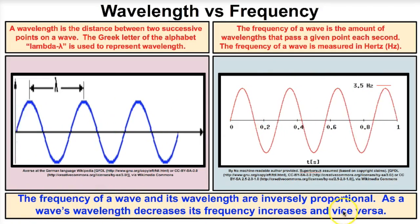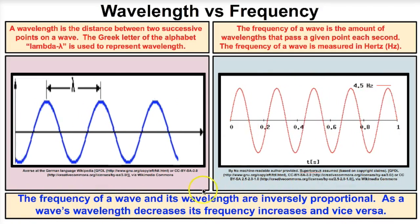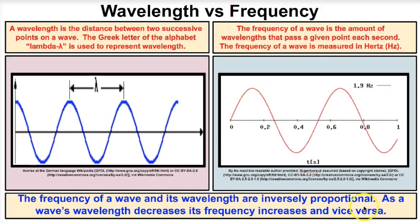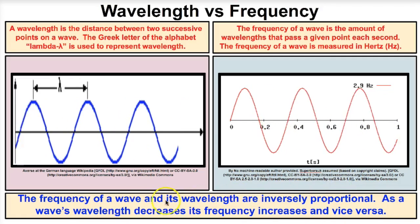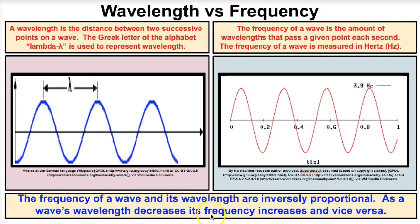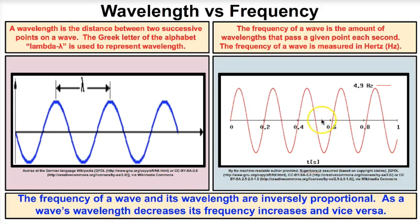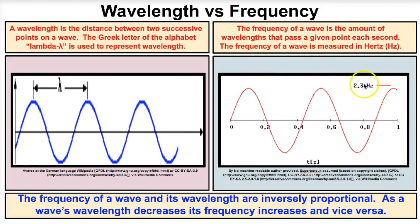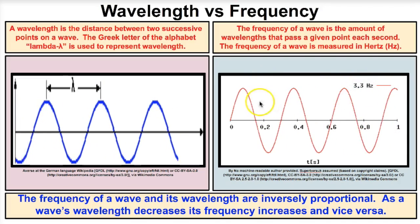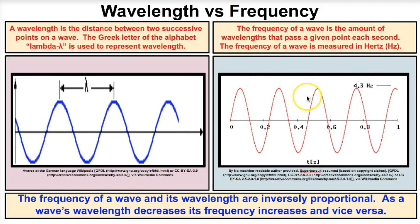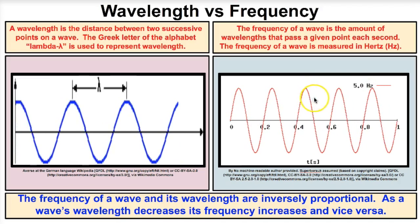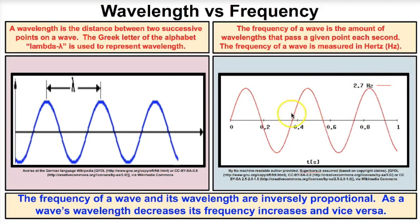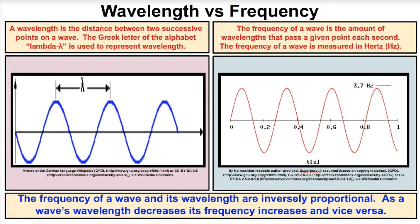The frequency of a wave and its wavelength are inversely proportional. As a wave's wavelength decreases, its frequency increases, and as a wave's wavelength increases, its frequency decreases. If wavelengths get smaller the frequency increases, and if we stretch the wave out and increase the wavelength, the frequency decreases. They are inverses of one another.